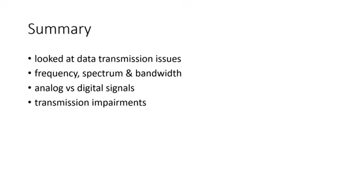In summary, we have looked at data transmission issues, terminology related to data transmission such as frequency, spectrum, and bandwidth, types of signals in terms of being analog versus digital, and the various transmission impairments that may occur. We also looked at common formulas related to attenuation in computing channel capacity and studied examples on how to apply these formulas in a practical setting.